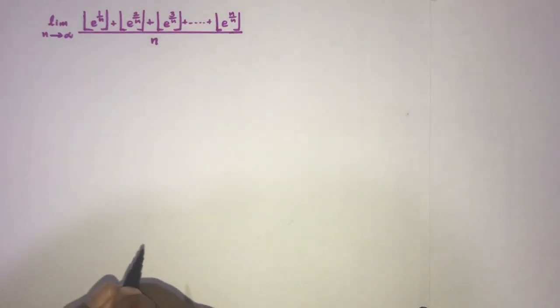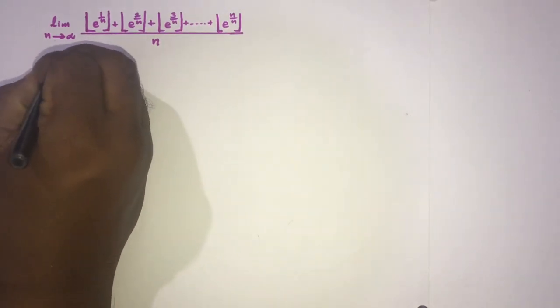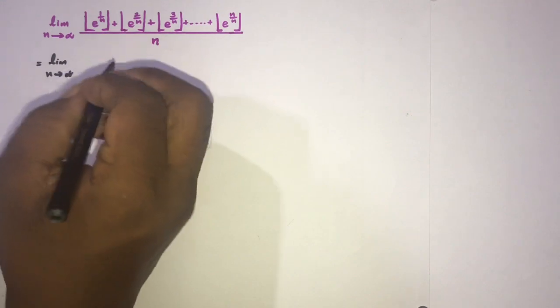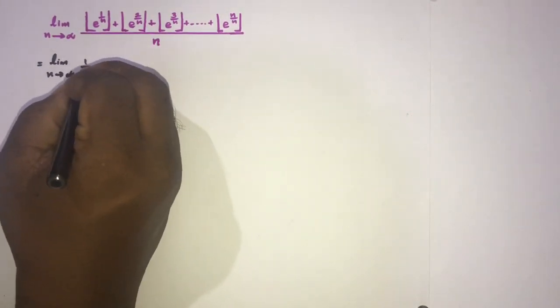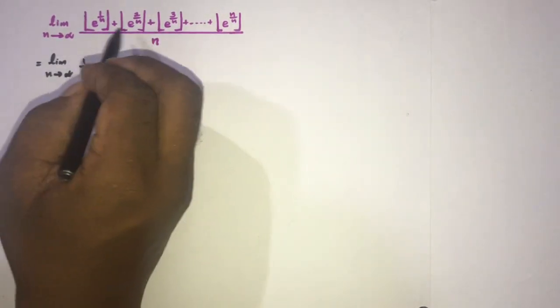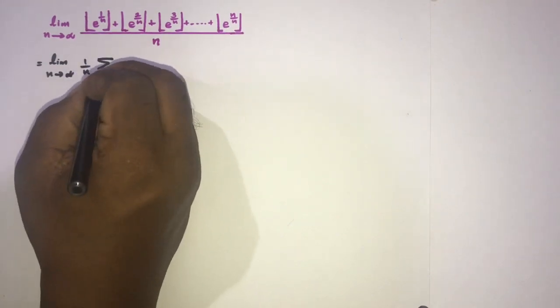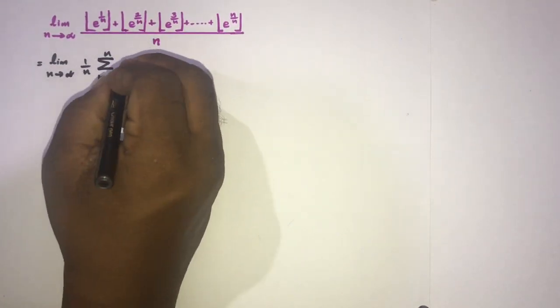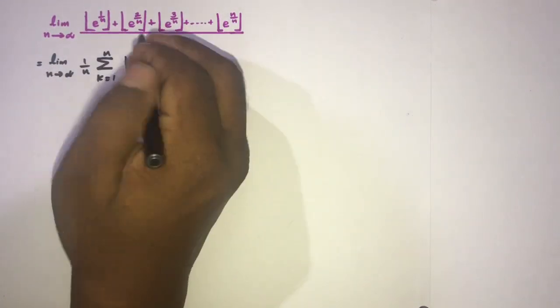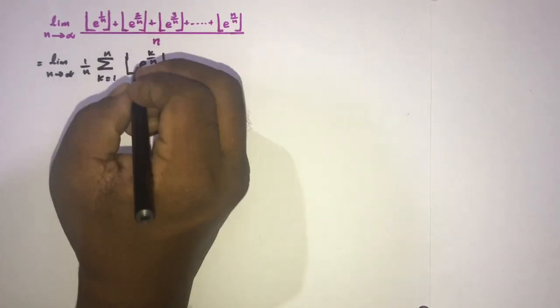Well, how to begin? Okay, first we can write here limit n approaches to infinity. Now, here 1 over n. Now, here we have a series, so we can write this series using sigma notation. So we can write summation k equals 1 to n. Now, here floor of e to the, here 1, 2, 3, so k over n.